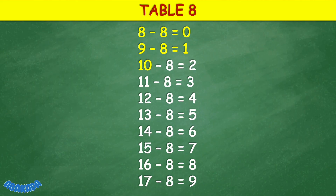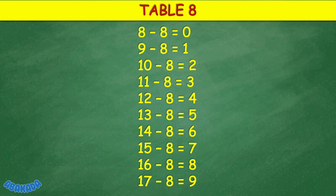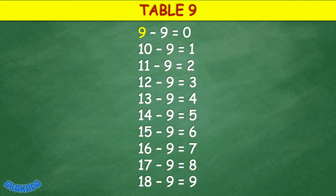Table 8: 8 minus 8 equals 0, 9 minus 8 equals 1, 10 minus 8 equals 2, 11 minus 8 equals 3, 12 minus 8 equals 4, 13 minus 8 equals 5, 14 minus 8 equals 6, 15 minus 8 equals 7, 16 minus 8 equals 8, 17 minus 8 equals 9, 15 minus 9 equals 8.